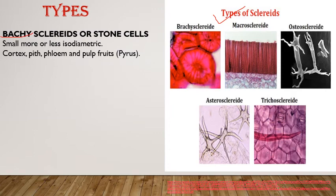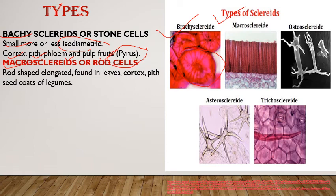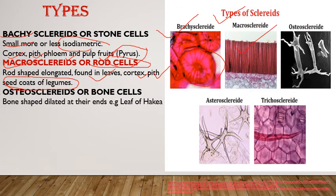Types of sclereids: brachysclereids or stone cells are small, more or less isodiametric cells with the same diameter, present in cortex, pith, phloem, and pulp of fruits — for example pyrus. Macrosclereids are large rod-shaped cells present in leaves, cortex, pith, and in the seed coats of legumes. Osteosclereids or bone cells are bone-like structures with swelling or dilation at the ends — present in leaves of Hakea and seed coat of pea.